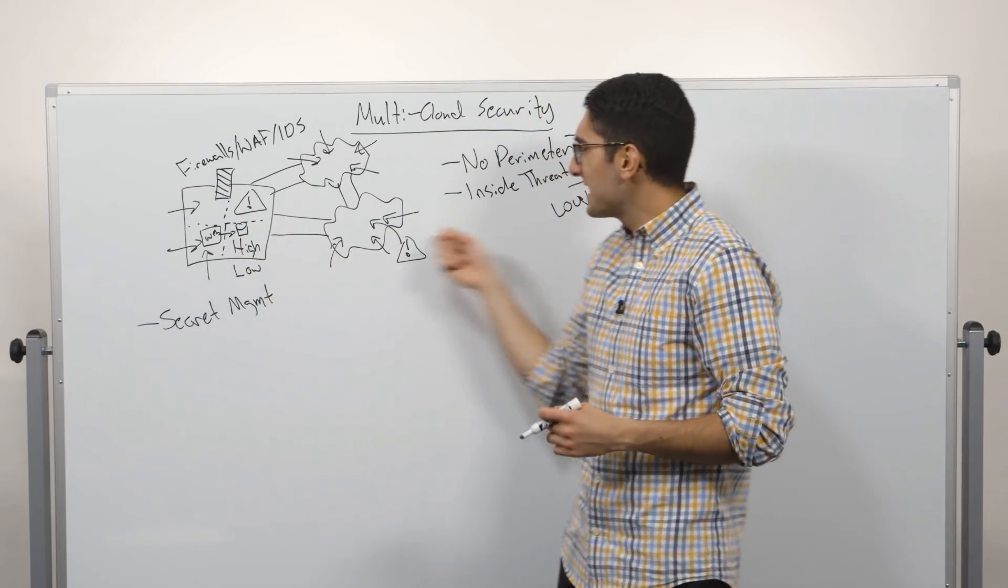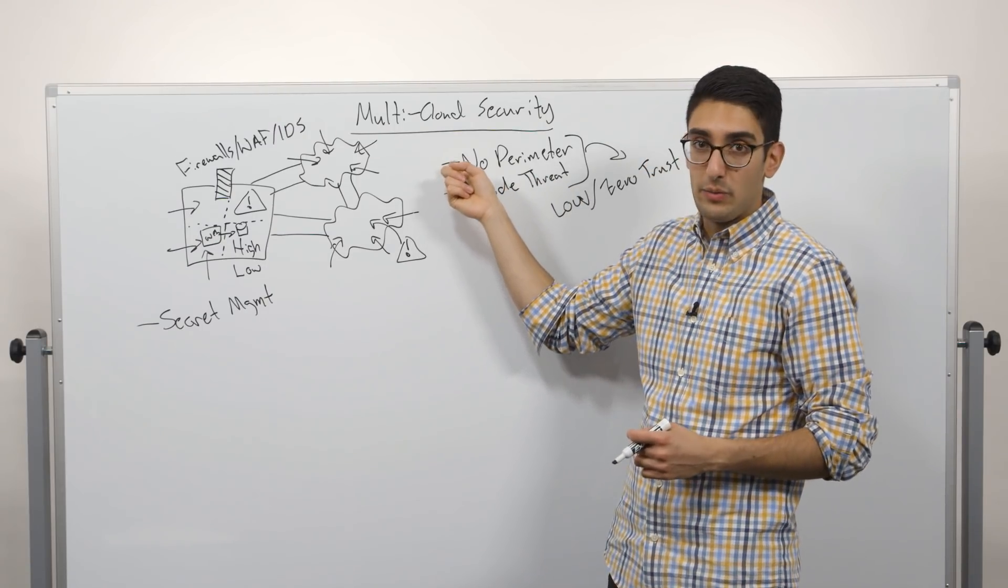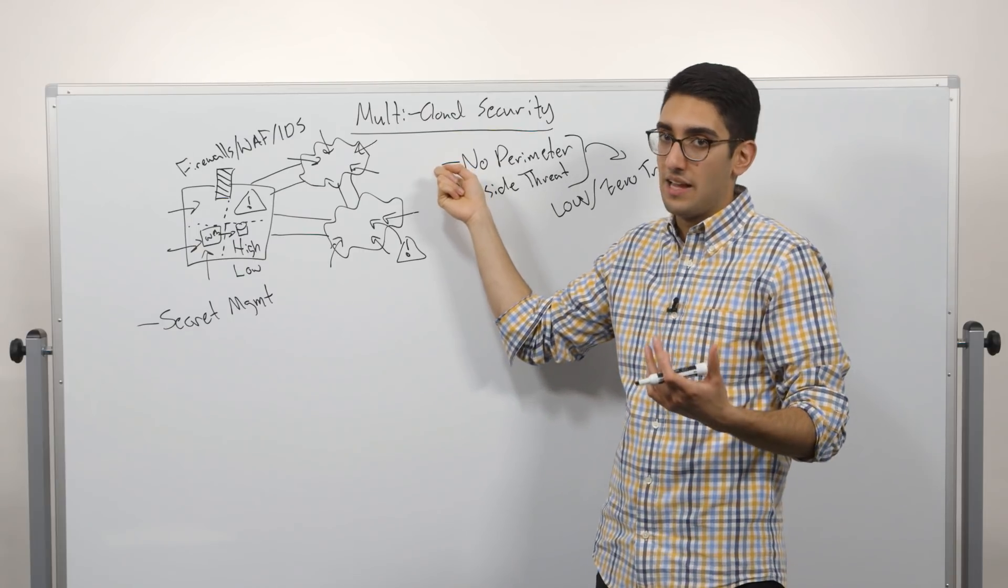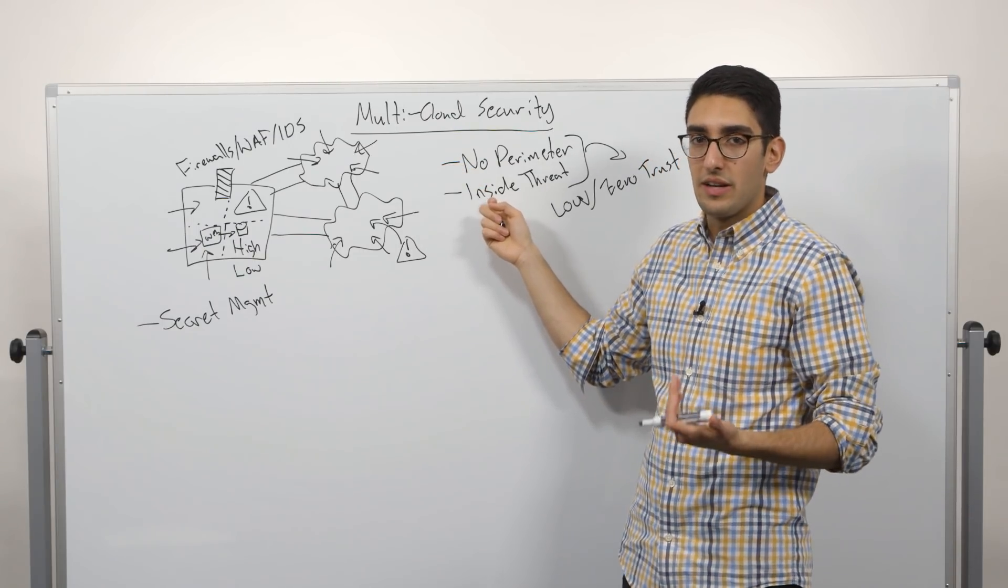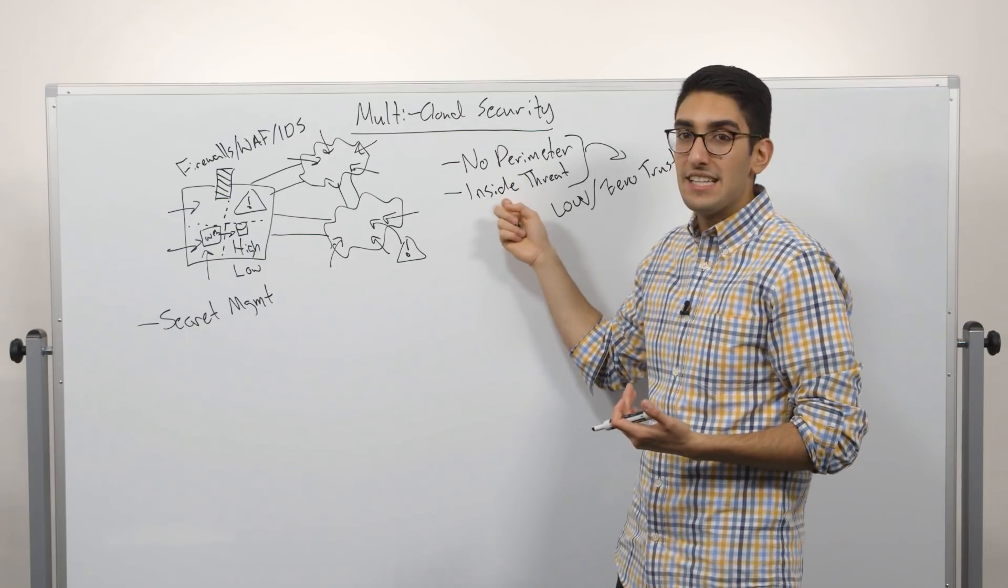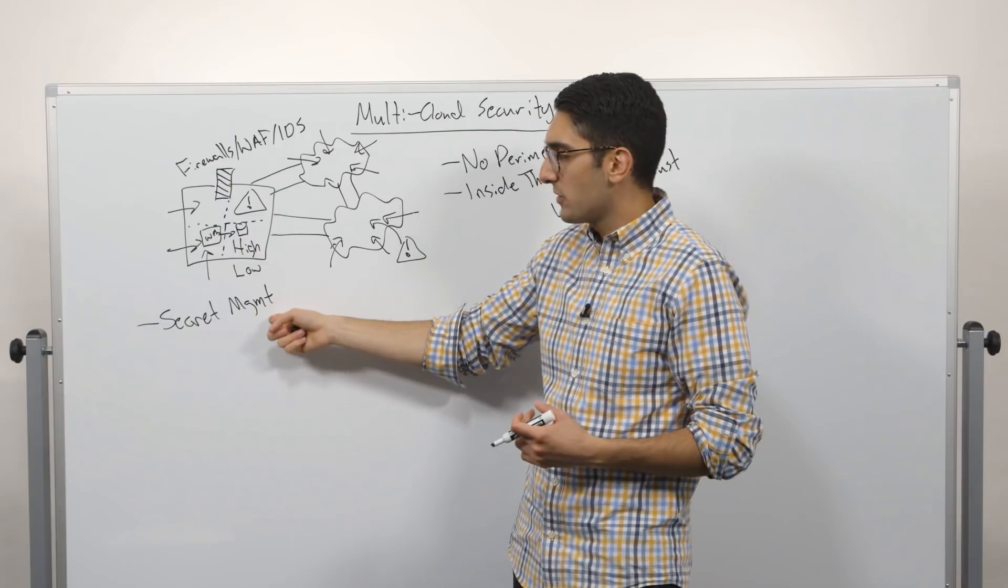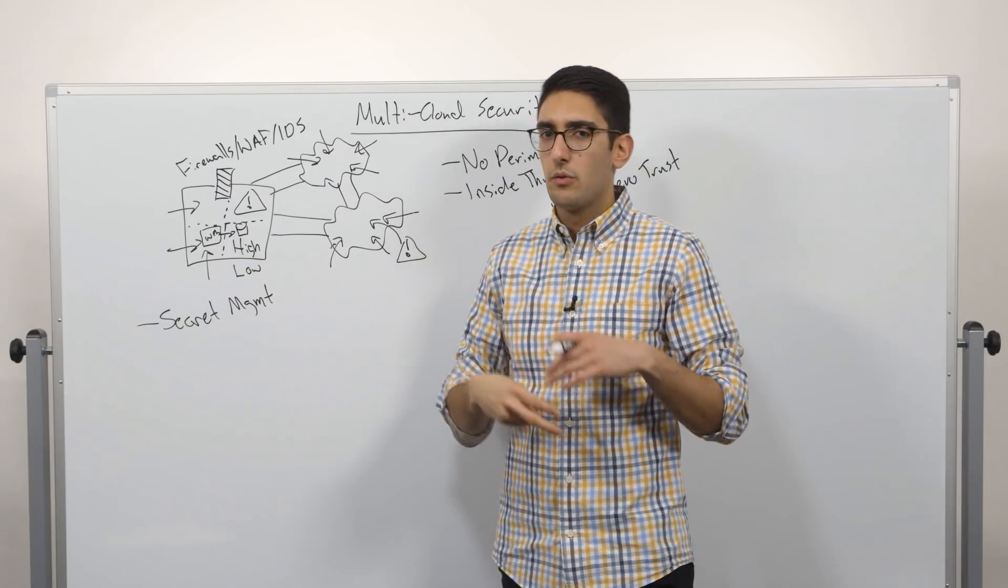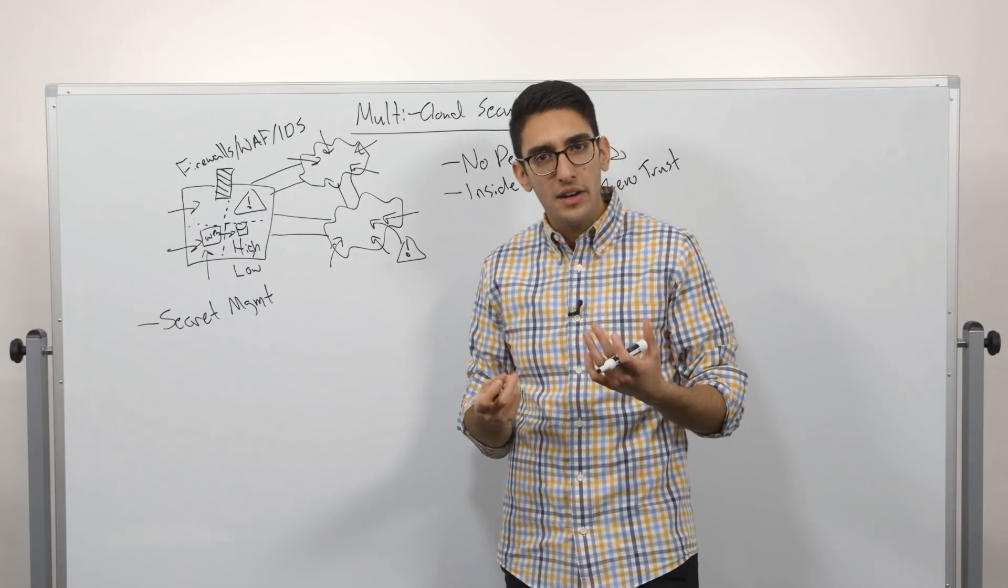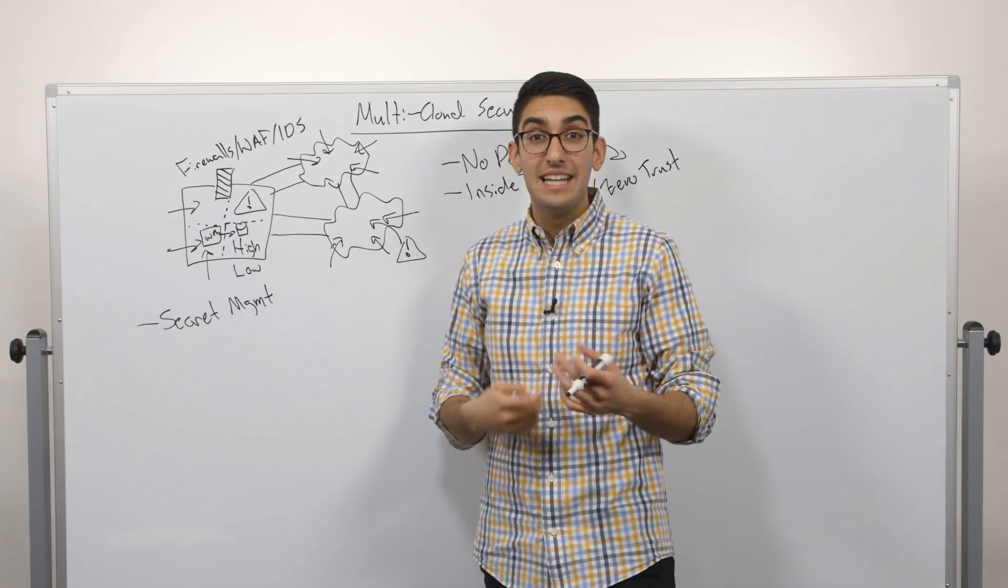The challenge is once we take this assumption of saying, you know what, maybe you can get on our network. Maybe there is a way on our network, and we don't trust the perimeter as the ultimate line of defense. And maybe you're someone who's already on the network. Maybe you're an insider, should it be this easy to get access to our database password? And what becomes clear is what we really should be doing is protecting these secrets much more carefully. We should encrypt them, we should have access controls around them, we should be auditing who has access to credentials, and it really should only be given out on a need-to-know basis.